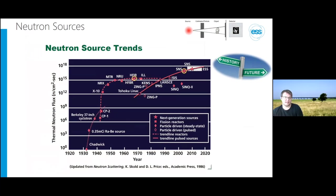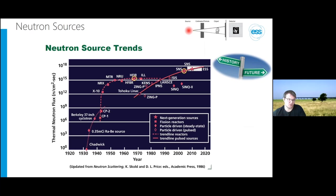Looking at the evolution of neutron sources over time: the neutron flux has developed steadily for both reactor and accelerator-based spallation sources. ESS will be the most powerful to date, and SNS in the US is planning a second target station. The sources are getting better and better, with facilities actively collaborating and exchanging personnel.